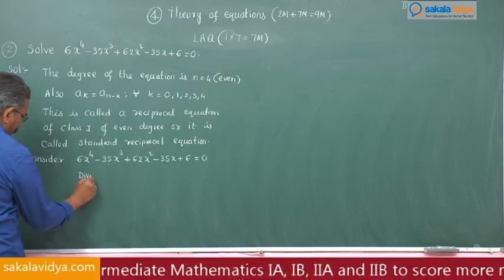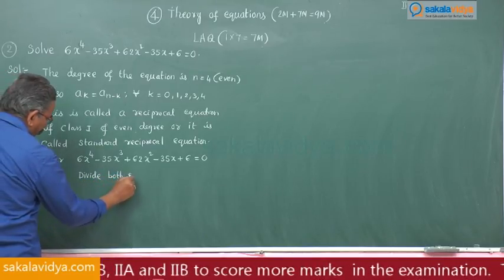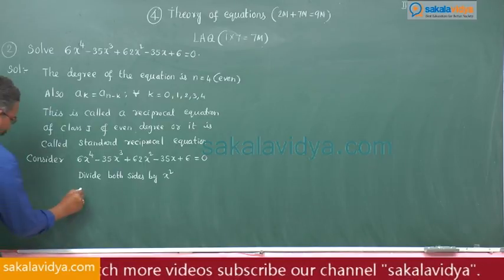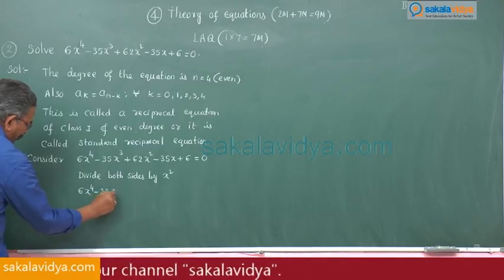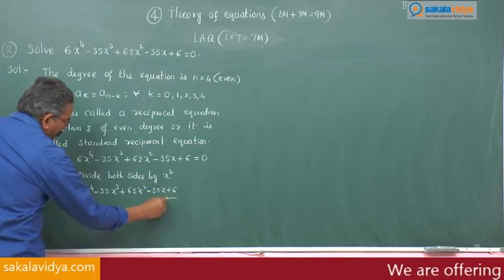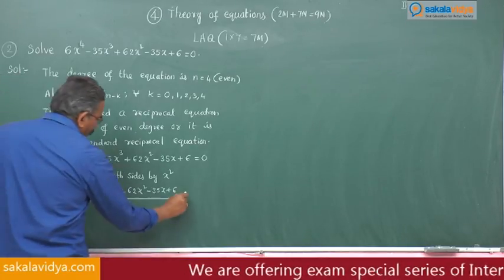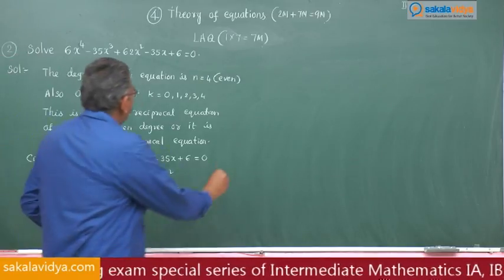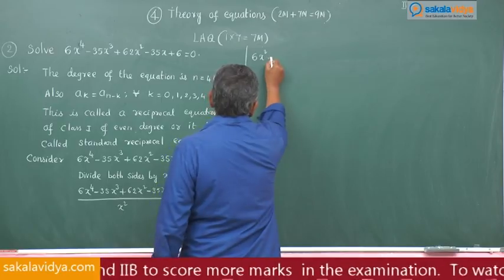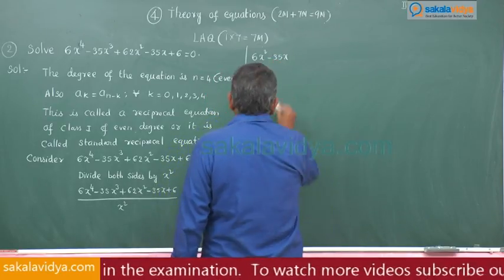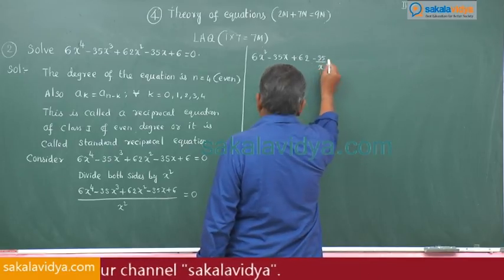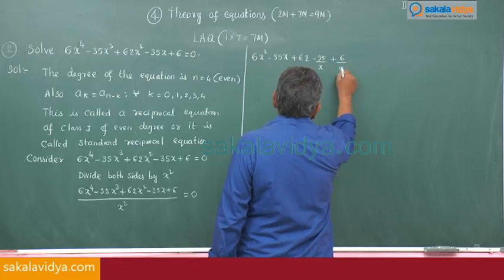Divide both sides by x squared. So we get: 6x² minus 35x plus 62 minus 35 divided by x plus 6 divided by x² is equal to 0.